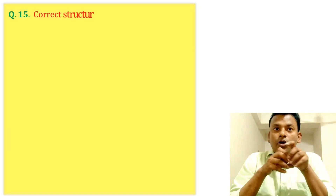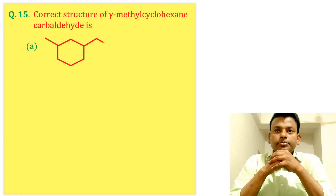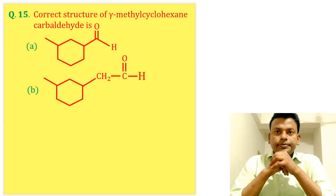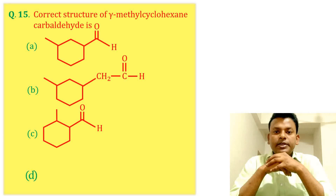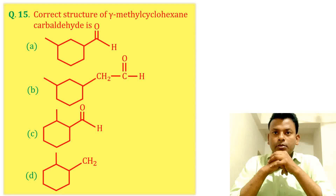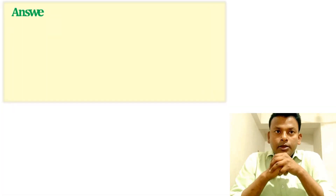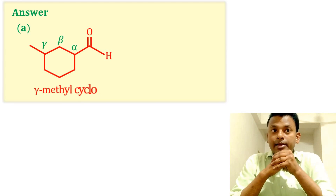Question 15: The correct structure of γ-methylcyclohexane carbaldehyde is which option? This question was set in JEE Main 29th July 2022 Evening Shift. Answer: Option A is correct. Counting alpha, beta, gamma positions confirms the methyl group is at the gamma position — so Option A is correct.